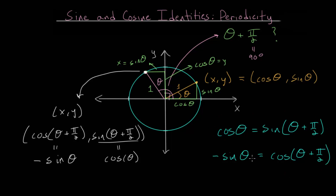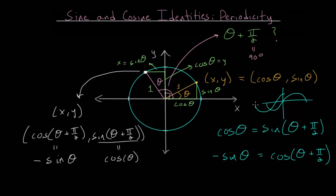The first identity tells us that if we shift the sine function pi over 2 radians, that equals the cosine function — we'll see this when we look at the graphs. If we graph the sine function and shift it left by pi over 2 radians by adding pi over 2, we get a function that looks like the cosine function if we had just graphed that by itself.